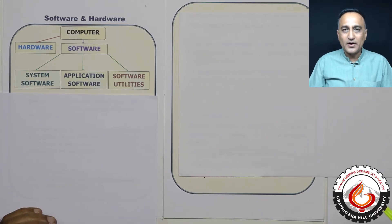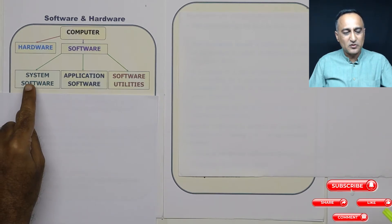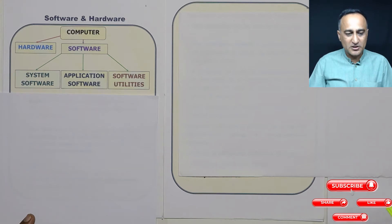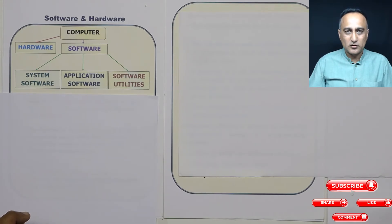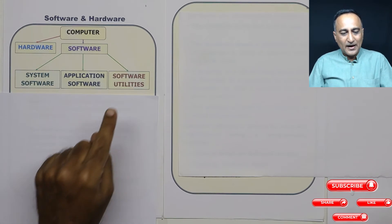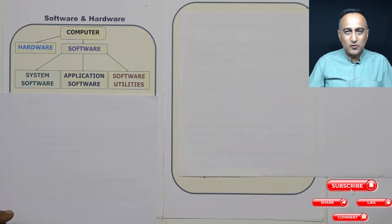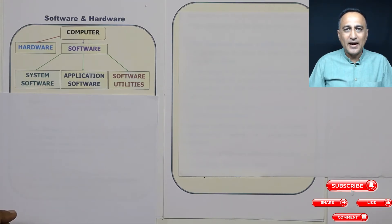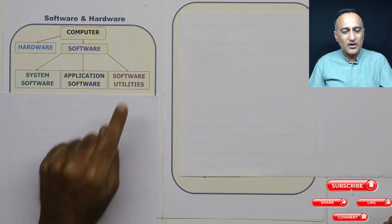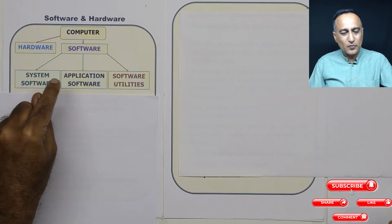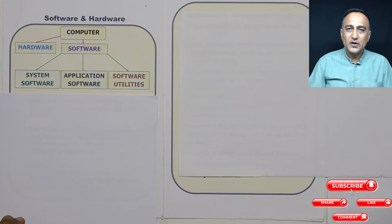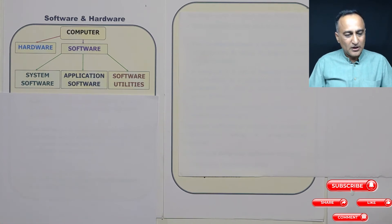When you take a look at software, software is divided into three parts, three major divisions. One is something called system software, an example of which is your operating system. The next is application software, an example of which can be your MS Word, Microsoft Excel, and so on. The third class of software is something known as software utilities — an example could be your antivirus software or software to clean your hard disk. These three aspects — system software, application software, and software utilities — will be discussed separately in a video.